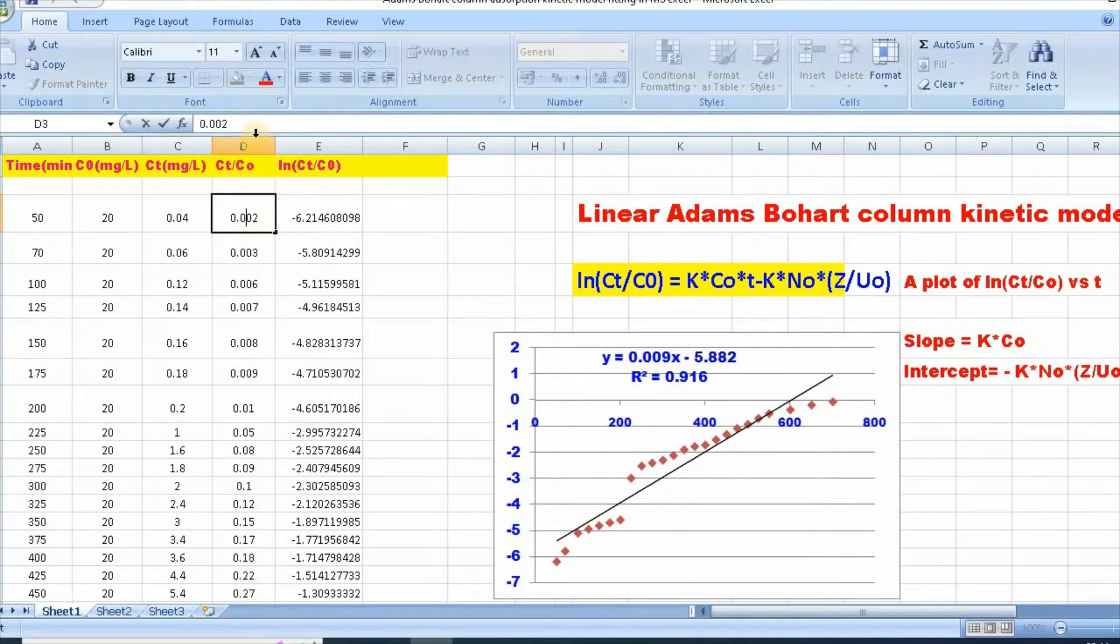Then, we need to convert this value into ln(Ct/C0). I have done this just equal to ln bracket start, this column bracket close. Then, enter and scroll down this.